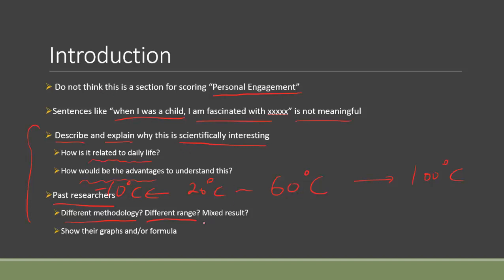Alternatively, if you find that researchers A, B, and C have slightly different results — maybe their equations differ, or just the coefficients — for instance, y = kx², where k differs between researchers — you might want to investigate what affects that. When discussing those researchers, show more in-depth information about their findings.